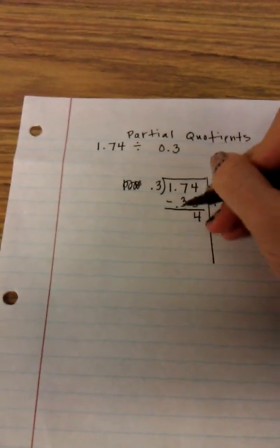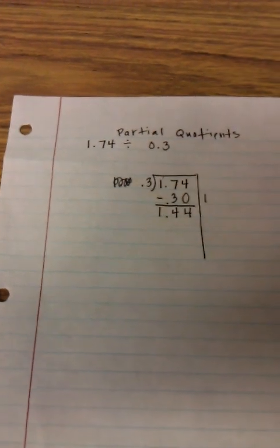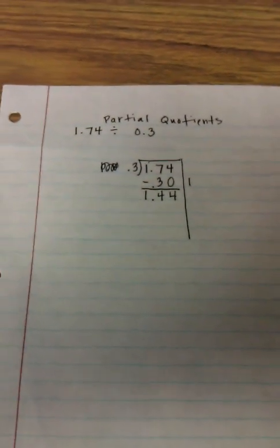4 minus 0, and 7 tenths minus 3 tenths is 4 tenths. 1 whole minus nothing. So I have 1 and 44 hundredths left.